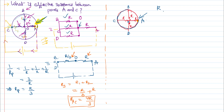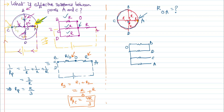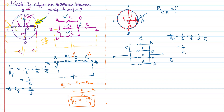So you find the resistance between points O and C, or O and A. We can redraw the circuit: from point O, say B; from the same point, D; from the same point, C; from the same point, A. All of B, C, D, A are connected in the circle. All these resistors are in parallel, so 1 by R_parallel equals 1 by R1 plus 1 by R2 plus 1 by R3 plus 1 by R4, which gives 4 by R. Therefore R_parallel equals R by 4.